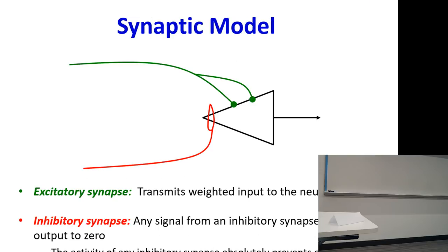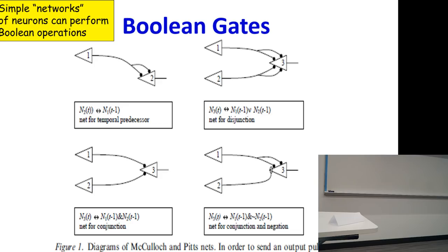There are the excitatory synapses, which actually excite the neuron — if you have sufficient excitation, it's going to fire. You also have the inhibitory synapses: if some signal comes down this inhibitory synapse, this neuron is not going to fire regardless of what comes in from the excitatory ones.